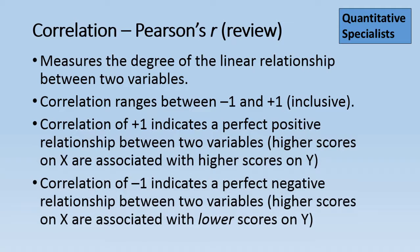A correlation of negative 1 indicates a perfect negative relationship between two variables. Or, higher scores on X are associated with lower scores on Y.